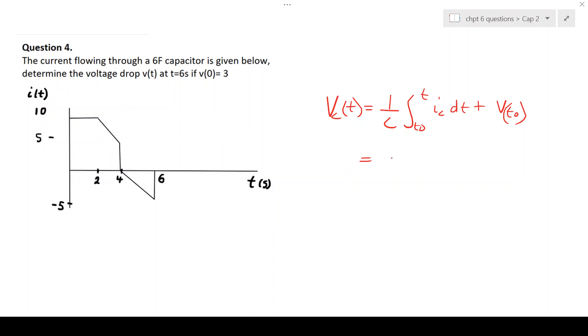So that's going to give us 1 over 6, integral from 0, in this case, to 6 seconds, of Ic dt plus the initial voltage, which is 3.